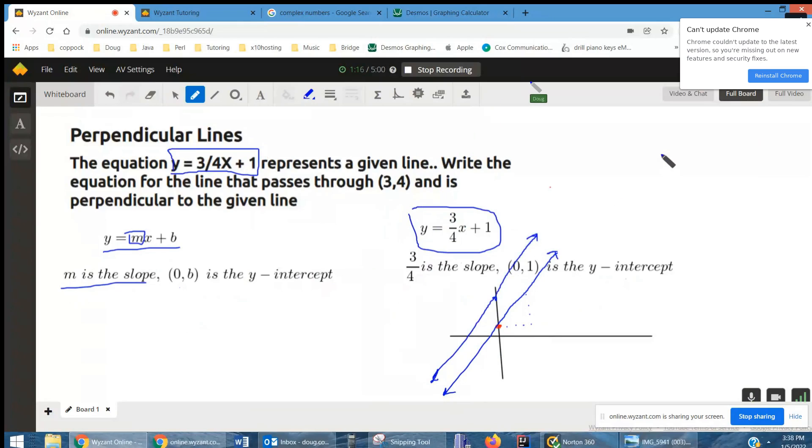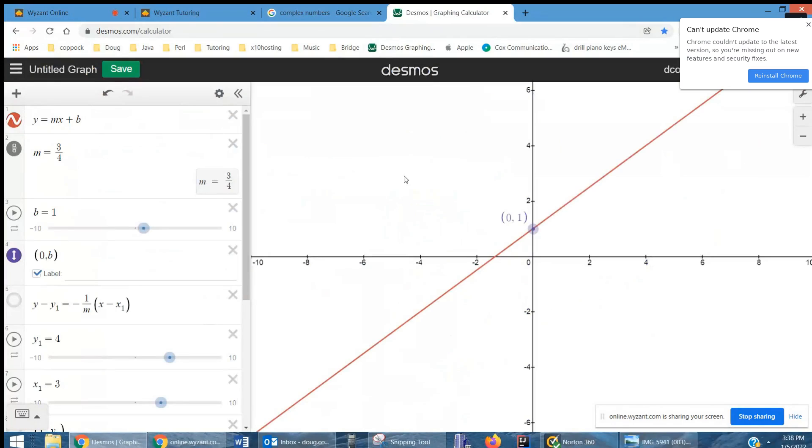Because parallel lines have the same slope. So if I go to Desmos, I'll show you that's what's happening. Here's y equals mx plus b. That's this red line right here.